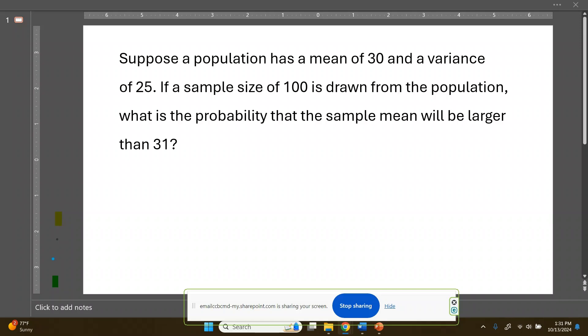Here's another probability question for us to work. Suppose a population has a mean of 30 and a variance of 25. If a sample size of 100 is drawn from the population, what is the probability that the sample mean will be larger than 31?